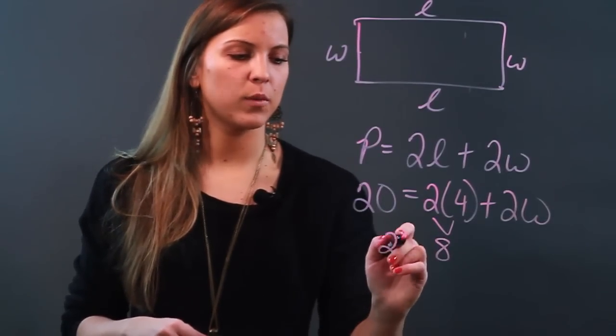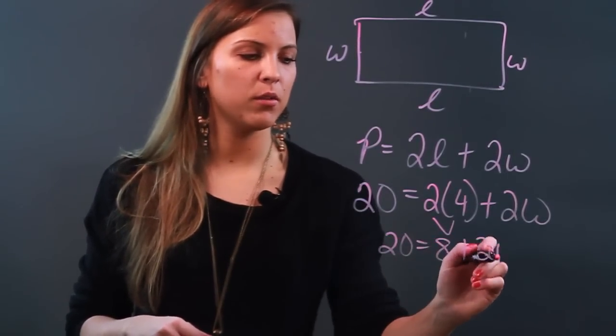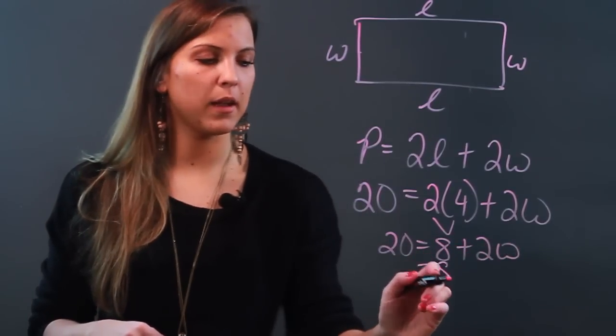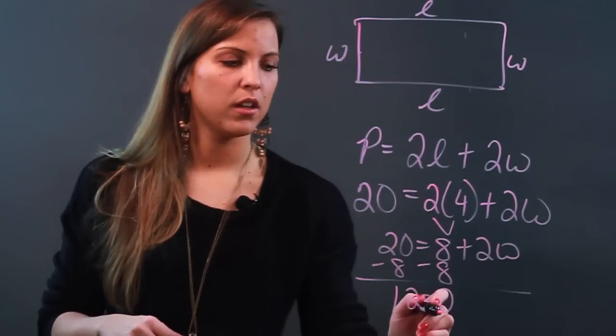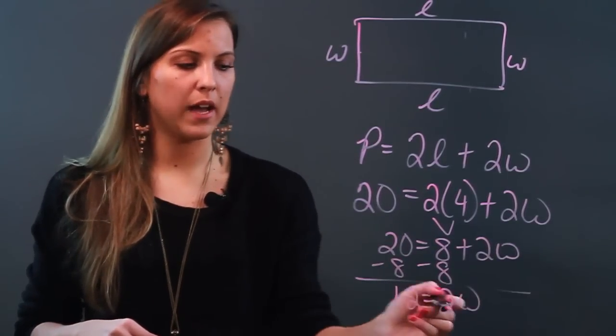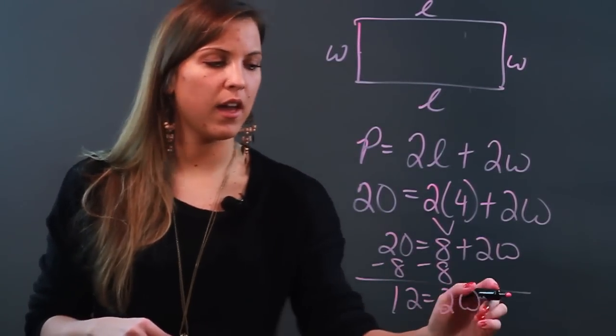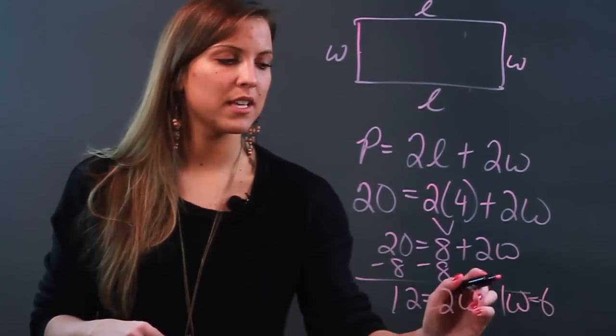That becomes 8, so I get 20 equals 8 plus 2W. I'm solving for width so I'm doing minus 8 on both sides. I get 20 minus 8 is 12. 12 equals 2W. I want to divide both sides by 2 here, and when I do that I'm going to get W equals 6.